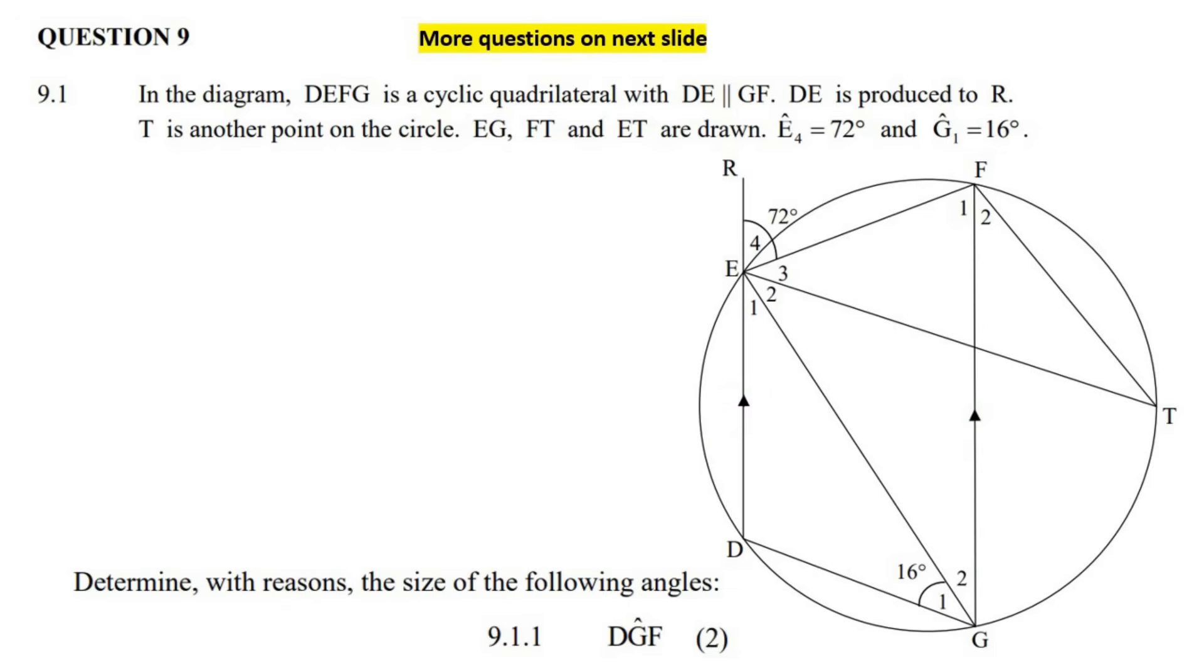DE is produced to R. T is another point. EG, EF, and ET are drawn. Some of the stuff that they say is really weird. Like, of course EG is drawn. Of course ET was drawn. What else would it have been? Anyways, E_F is equal to 72, and then G_1 is equal to 16.